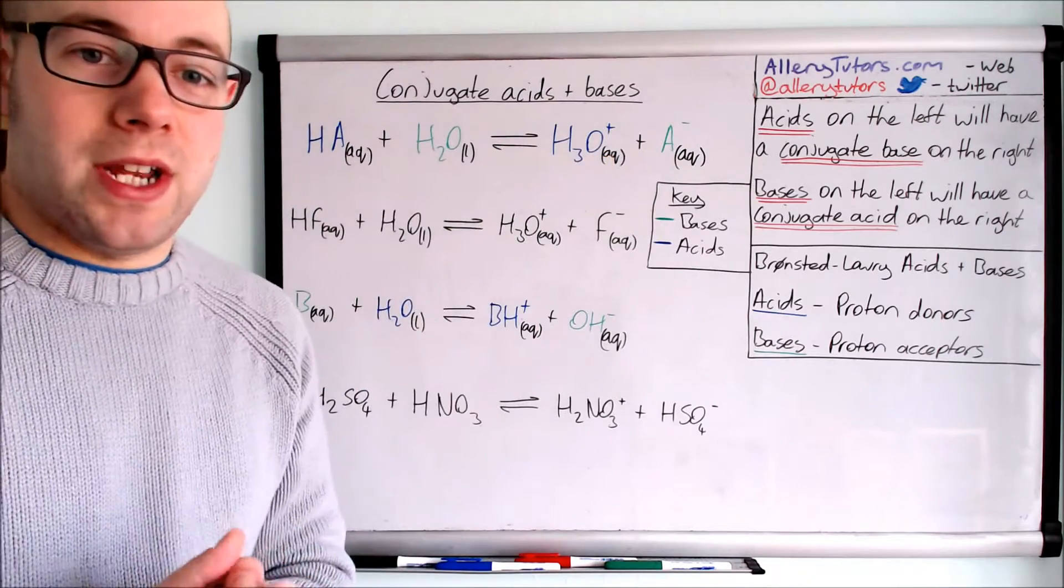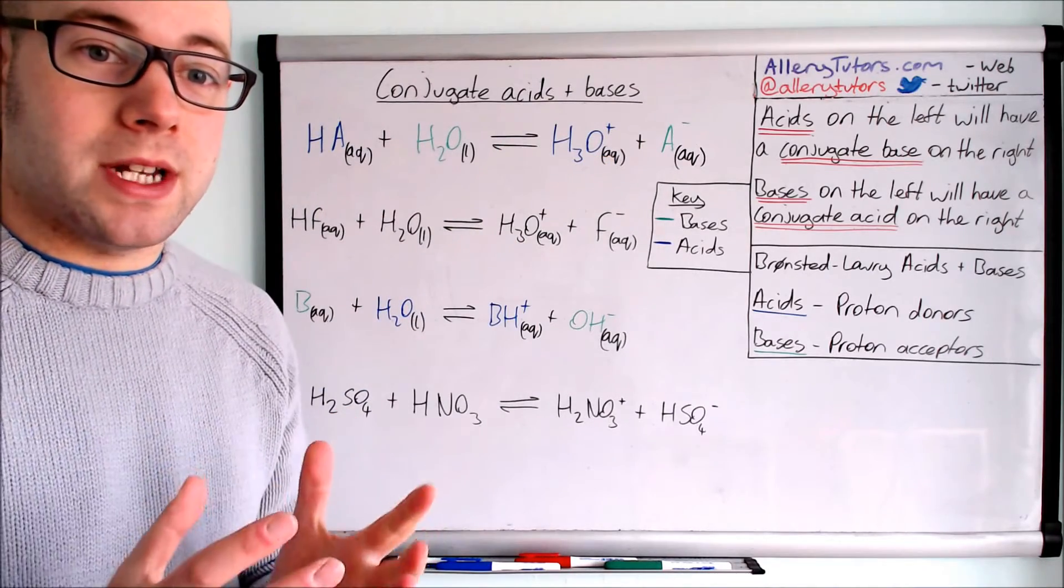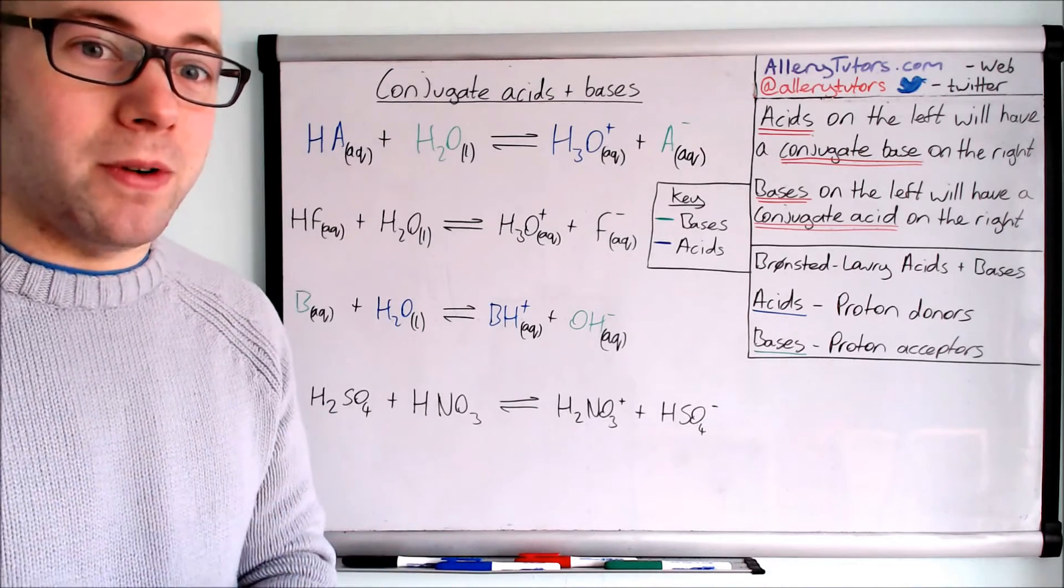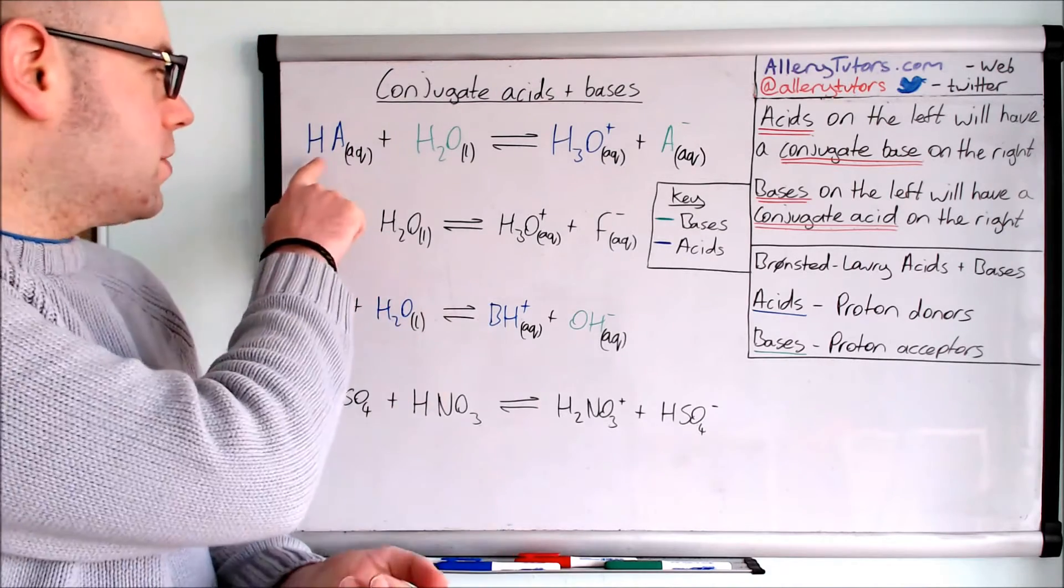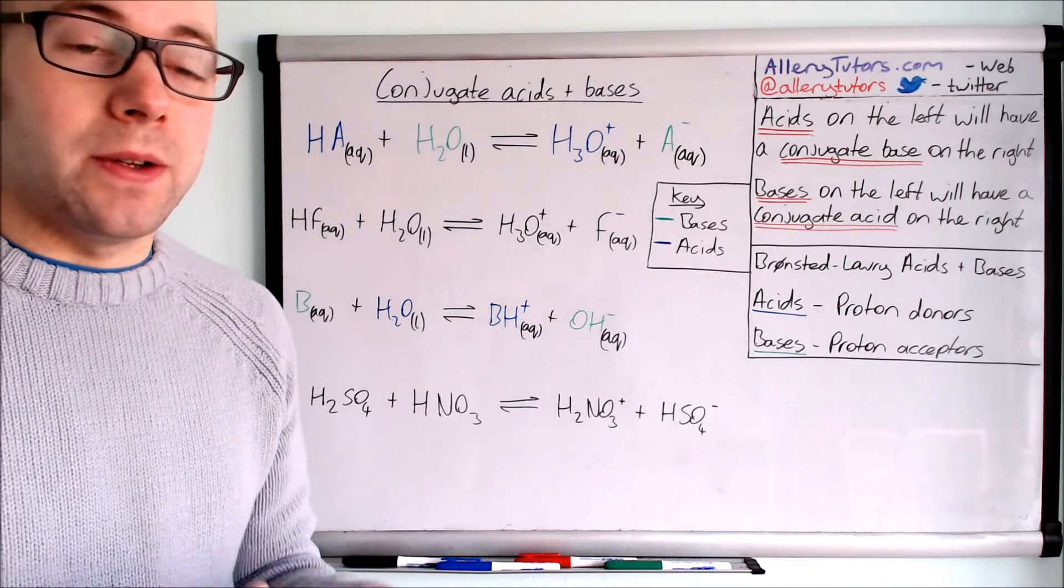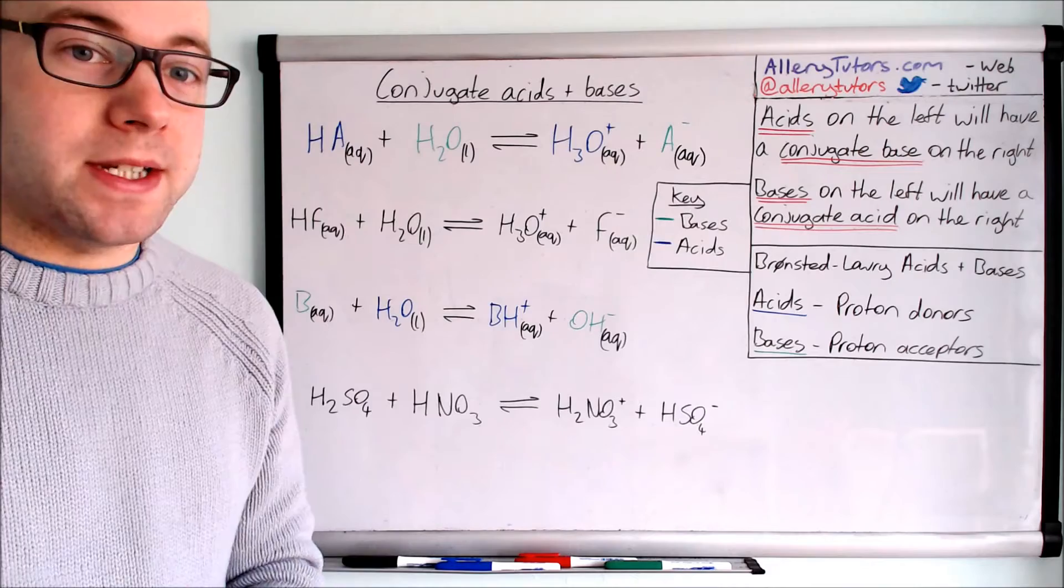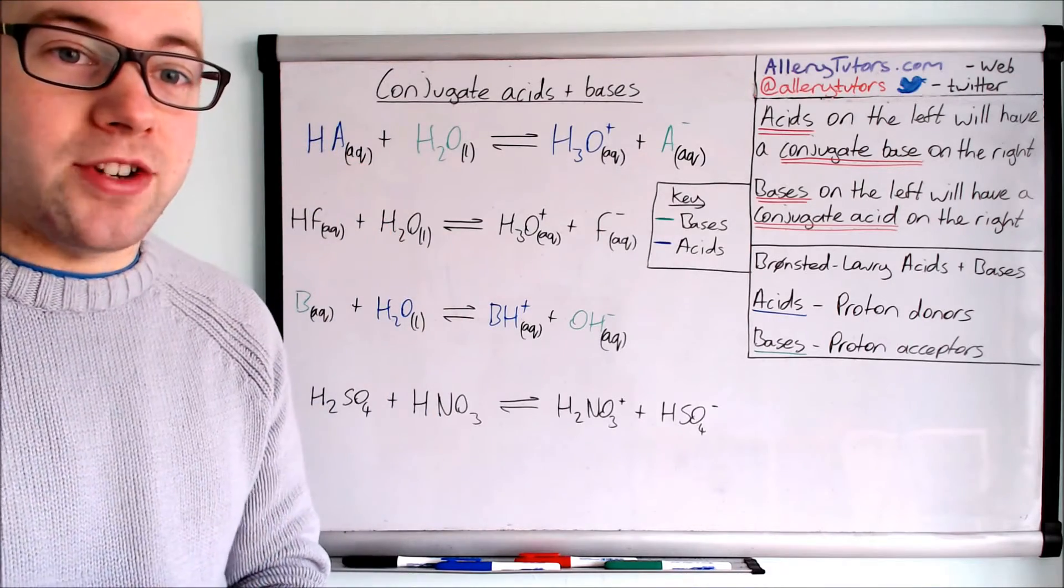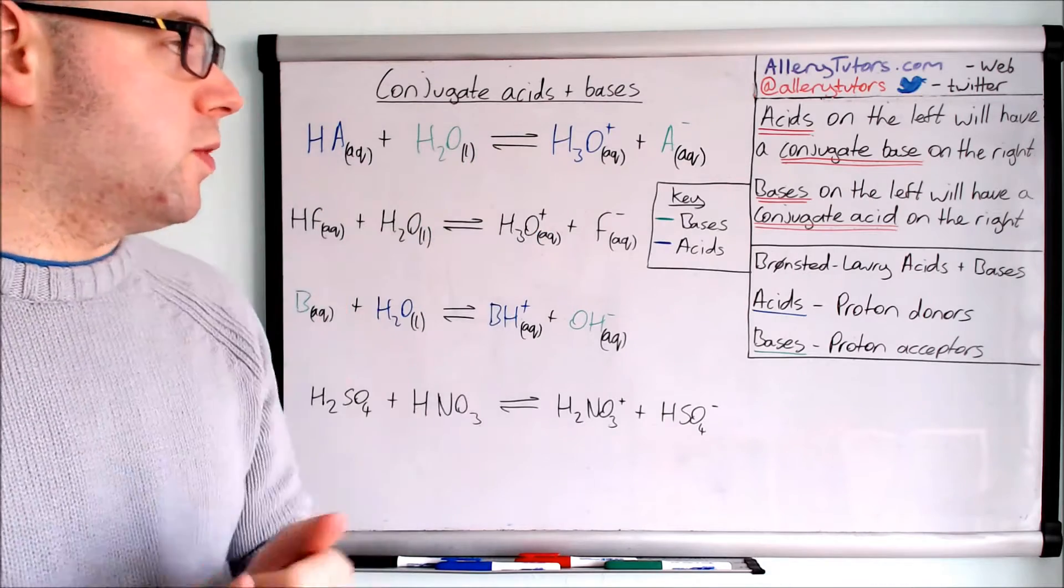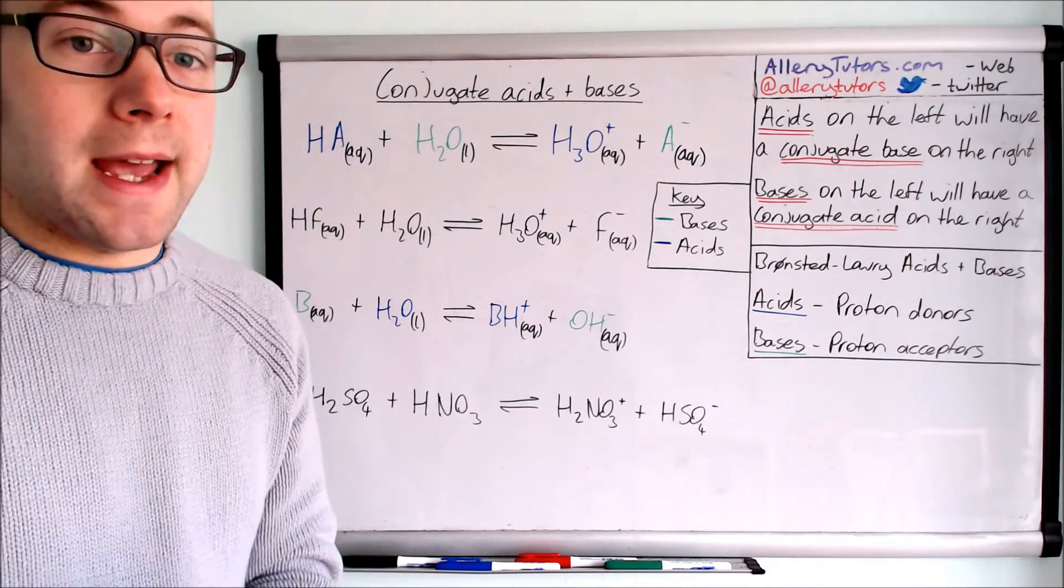So I've got a generic equation here and I've color coded it to help you see what's an acid and what a base is. All the blues on this board are representing acids and all the greens are representing bases. So you can see here we've represented an acid as HA, and if we react that with water we'll form H3O+ and A-.